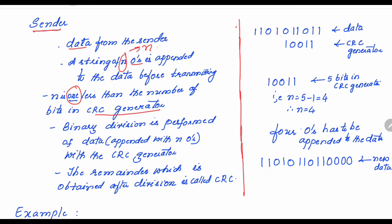Looking at the example values: the data from the sender is 1 1 0 1 0 1 1 0 1 1. The CRC generator is 1 0 0 1 1, which has 5 bits. So n = 5 - 1 = 4. Four zeros are appended to the data, giving us the new data: 1 1 0 1 0 1 1 0 1 1 0 0 0 0.